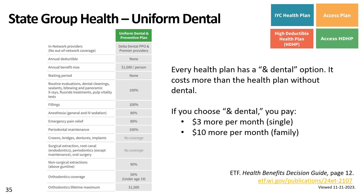Every health plan has a With Dental option that costs more than the health plan without dental. If you choose With Dental, you pay $3 more per month for single coverage and $10 more per month for family. This adds uniform dental provided by Delta Dental, which covers routine cleanings, x-rays, and fillings up to $1,000 per person each calendar year. It does not cover major or restorative care such as root canals, crowns, bridges, dentures, or implants. You stay enrolled each year unless you cancel during open enrollment. Uniform dental matches your health insurance coverage level.